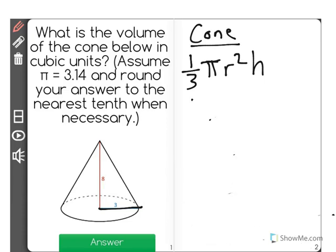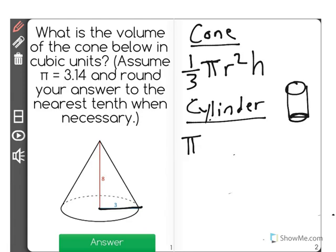Maybe you have a cylinder. Well, the formula for finding the volume of a cylinder, remember a cylinder looks somewhat like this, like a tube, is similar to a cone, except it's not 1/3. It is just pi times the radius squared times the height.